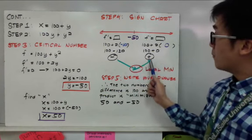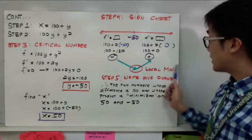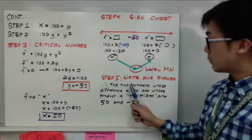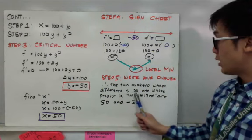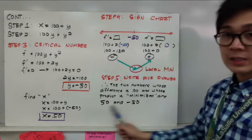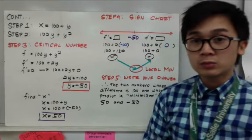Therefore, my function for this particular optimization problem is minimized. For step number five, organizing my answer, I'll have the two numbers whose difference is 100 and whose product is minimized will be 50 and negative 50. And that's how we answer optimization problems in calculus.